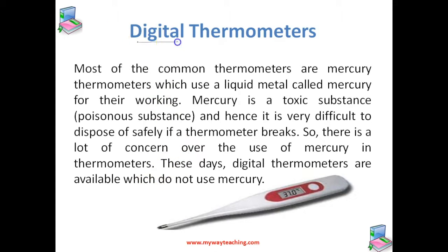Now let us study digital thermometers. Most common thermometers are mercury thermometers, which use a liquid metal called mercury. But mercury is a very toxic, poisonous substance, and hence it is very difficult to dispose of safely if a thermometer breaks. We must take care about that and dispose of it carefully with all safety measures.